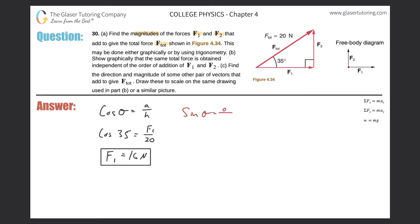So sine of theta equals the opposite side over the hypotenuse. So the sine of that angle, 35, will equal F2, now over 20. And again, same thing, just cross-multiply. So the value of F2 is sine of 35 times 20.